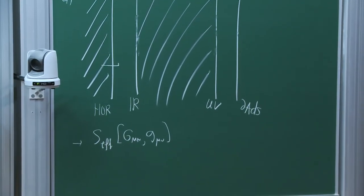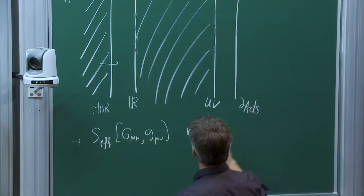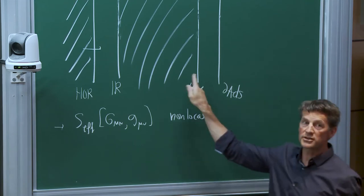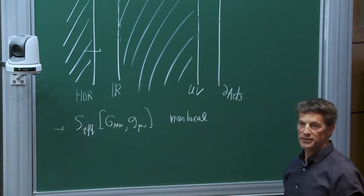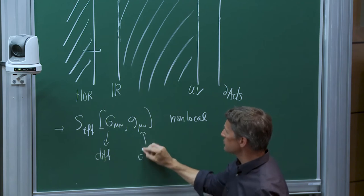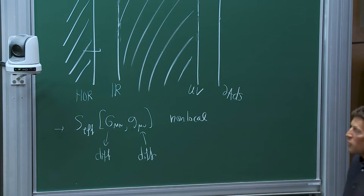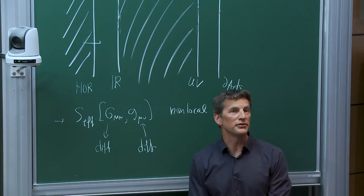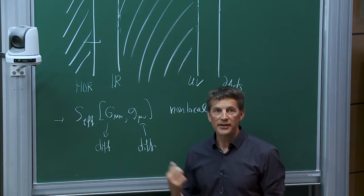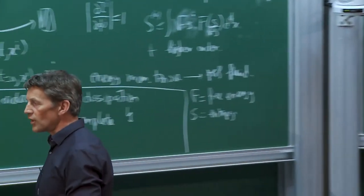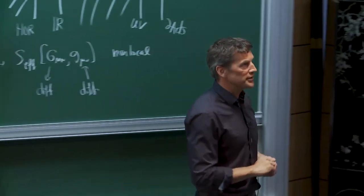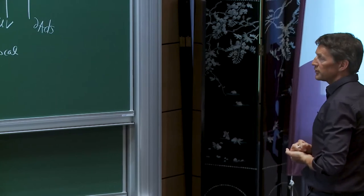The effective action will be very non-local, because this metric and this metric live on two independent spatial slices — there's a priori no relation between the coordinates on one slice and those on the other. Moreover, since we are computing an effective action in gravity, it's supposed to have diffeomorphism invariance for each metric separately. There's no local effective action with these two diffeomorphism invariances. The fact that you get a non-local effective action is usually a sign that we've integrated out light degrees of freedom.